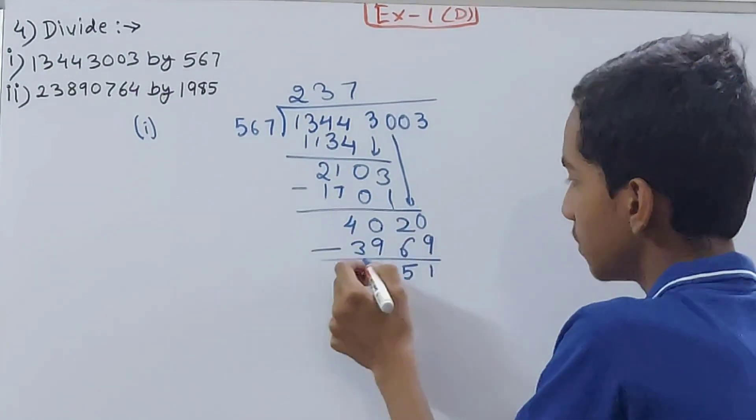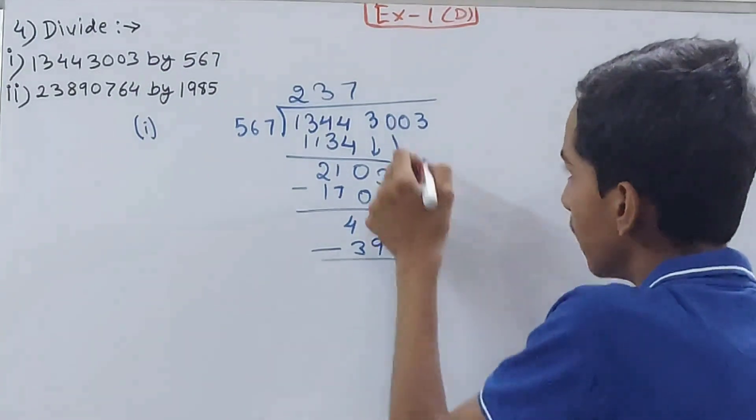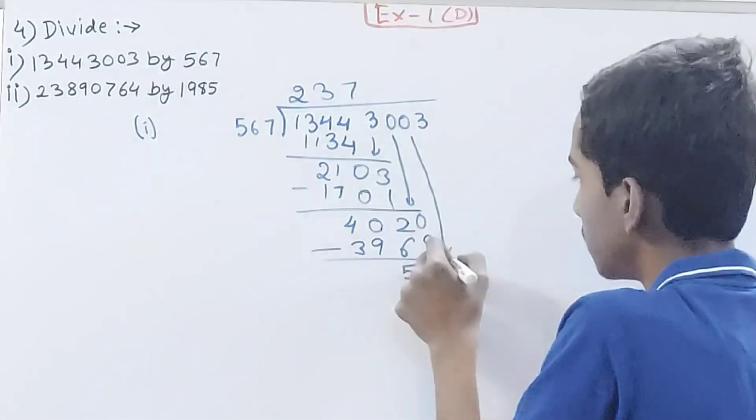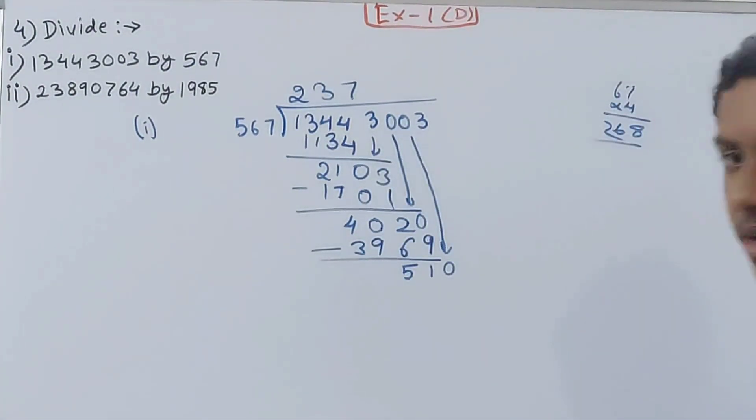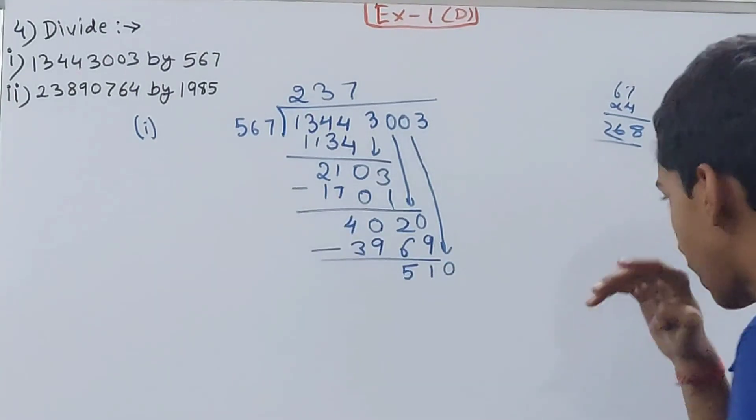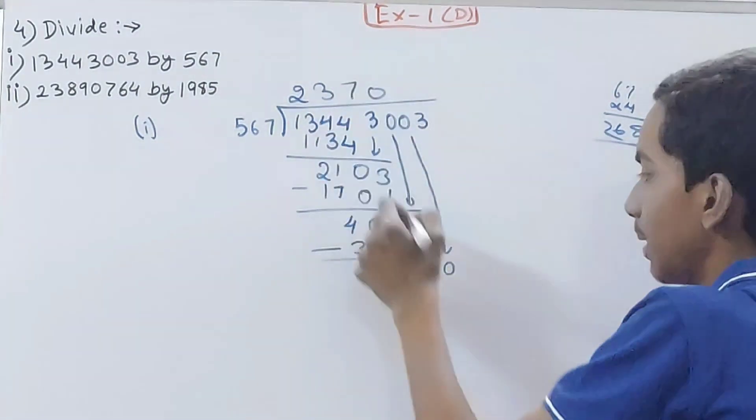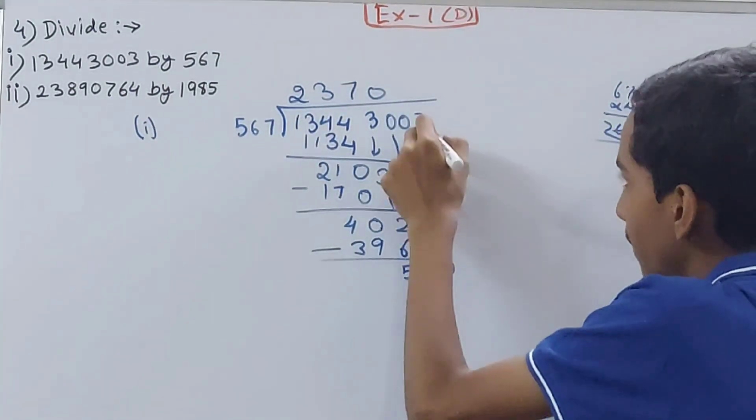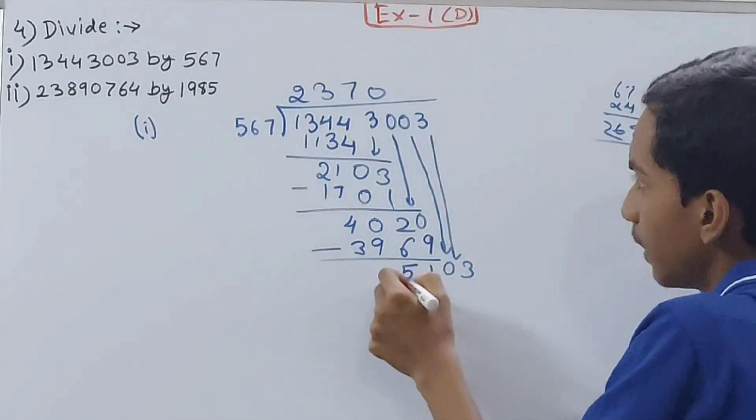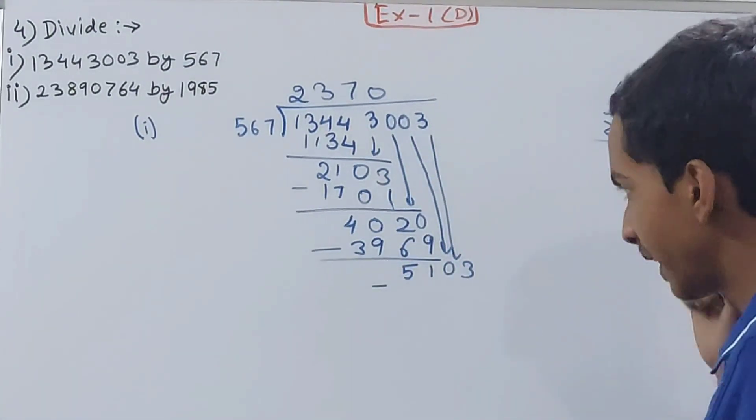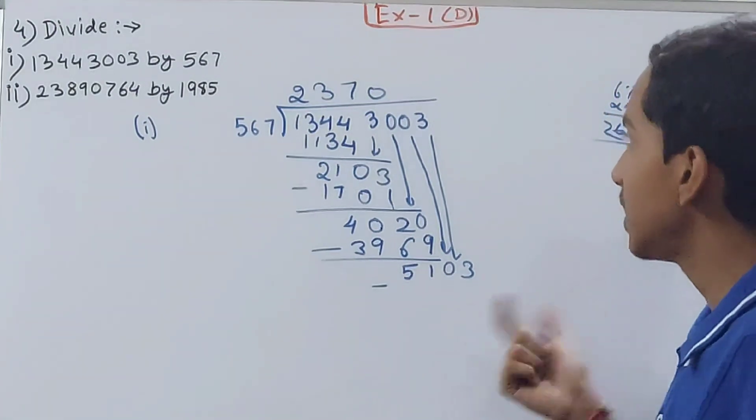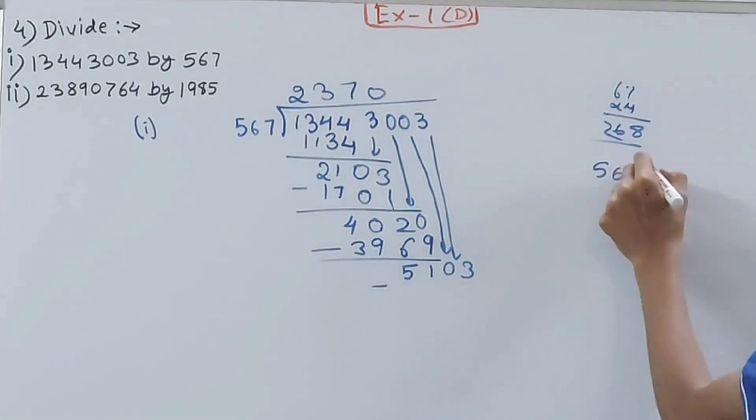51 here. Let's bring now the next one, that is 0, 510. 510 is smaller than 567, so this will go 0 times. I'll put a 0 and bring down the next one.